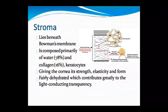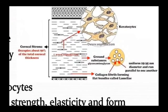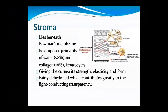The next structure is the stroma, located below Bowman's membrane. It is primarily 78% water and contains collagen and keratocytes — small cells that give the cornea strength and elasticity. It is fairly dehydrated and contributes greatly to light-conducting transparency. It has 90% of total corneal thickness. The ground substance contains glycosaminoglycans. Collagen fibers of 25 to 35 nanometer uniform diameter run parallel to one another in flat bundles called lamellae.